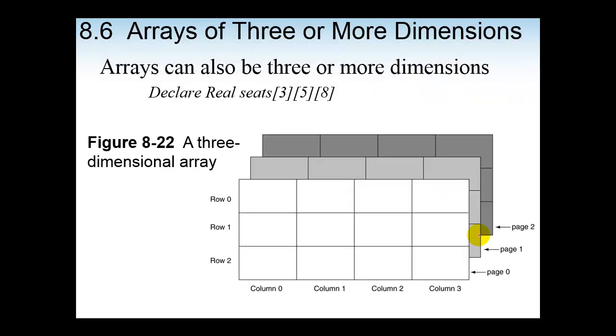Now as I stated earlier, arrays can be three dimensional or even more than three dimensional. And if we look here at our array seats, you could think of this as reading it as three sets of five rows containing eight elements. Once again, that's three sets of five rows containing eight elements. Then figure 8-22 here from our text is just illustrating the concept of a three dimensional array as pages. As you see we have three individual pages here of two dimensional arrays with our rows and our columns.